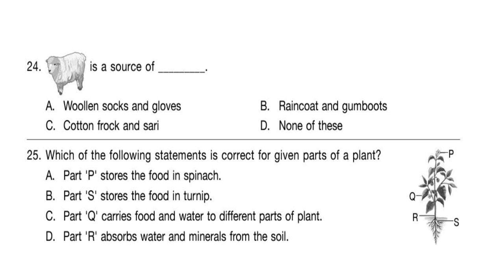Question 25. Which of the following statements is correct for the given parts of a plant? Read the statements carefully. The correct answer is Option B: Part S stores the food in the turnip.